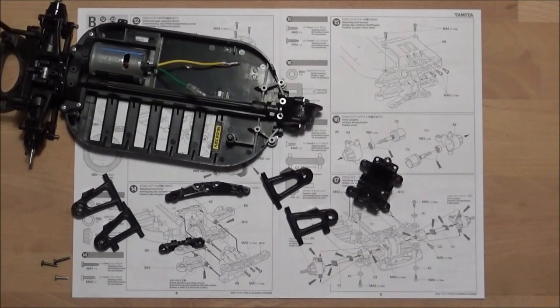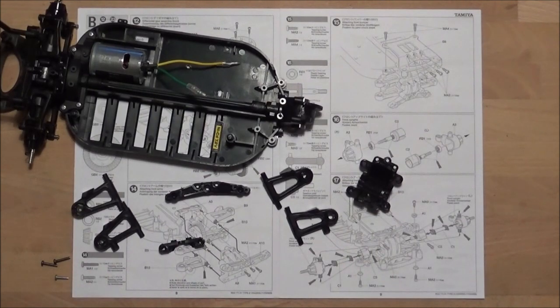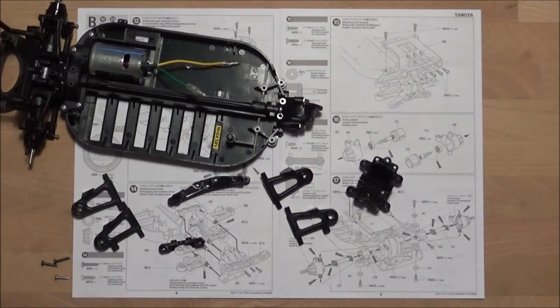Step 14 is installing the gearbox housing on the front lower and upper A arms or wishbones as I call them, along with the shock mount and body post mount. For this we're going to need two MA1s which are 3x50mm tapping screws and one MA2 which are 3x12mm tapping screws.